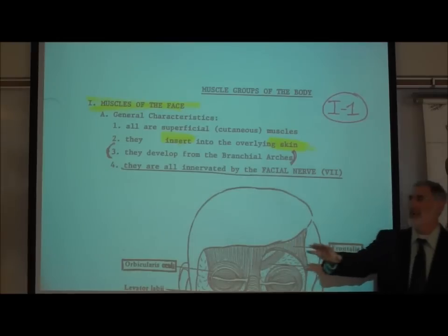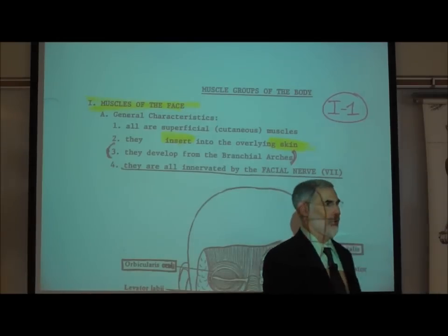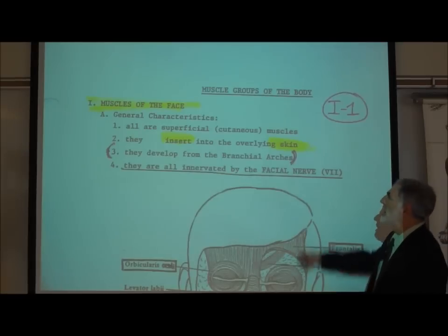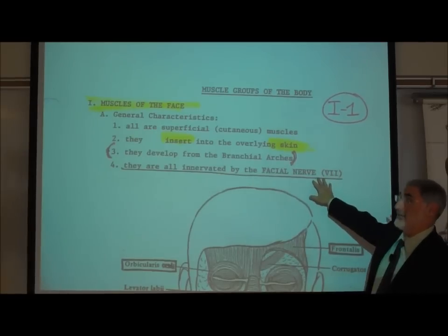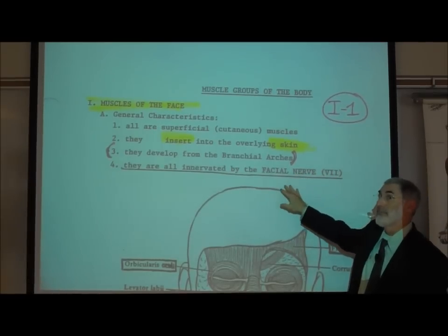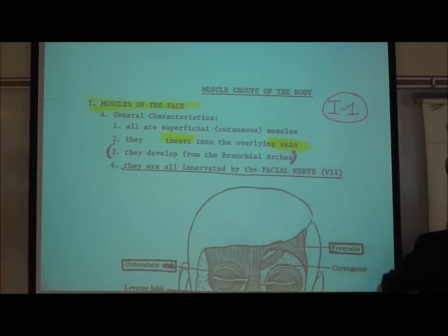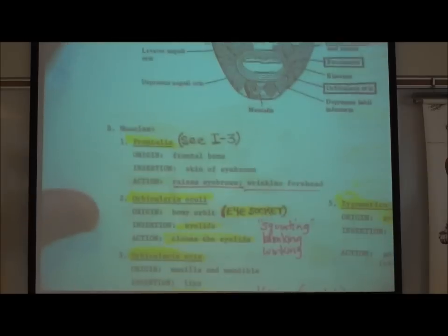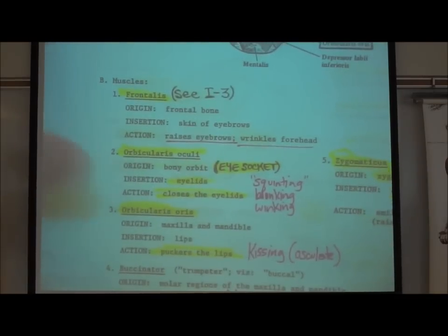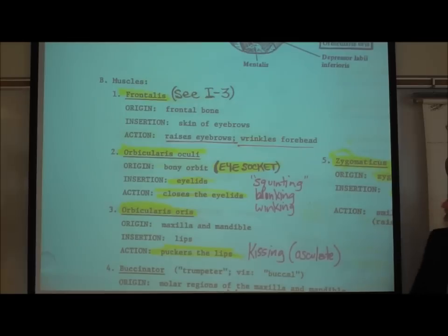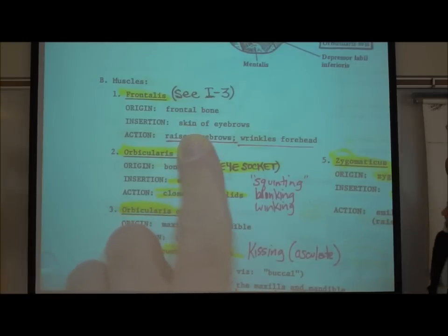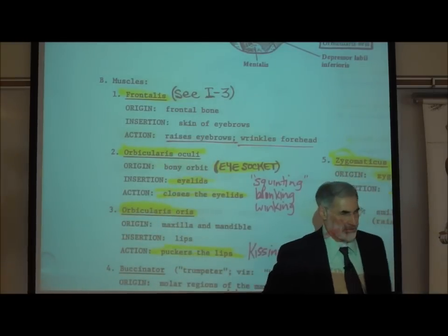It's easy to remember that the muscles of the face are controlled by a nerve called the facial nerve. The first muscle we'll mention is the frontalis. It originates on the frontal bone — that's why it's called the frontalis. It inserts on the skin of the eyebrows.